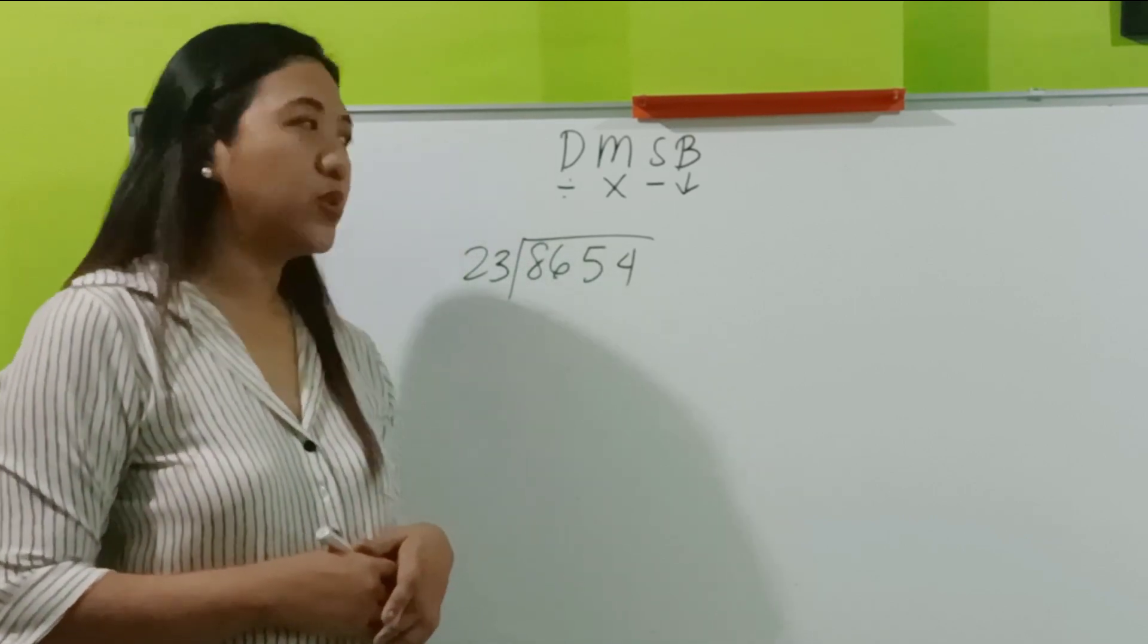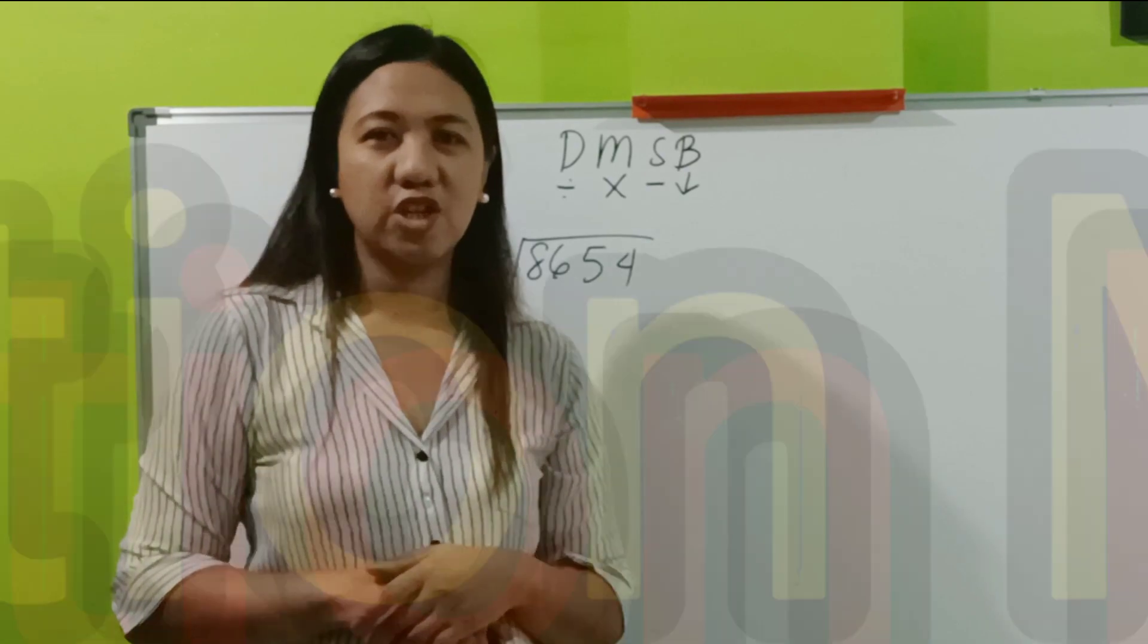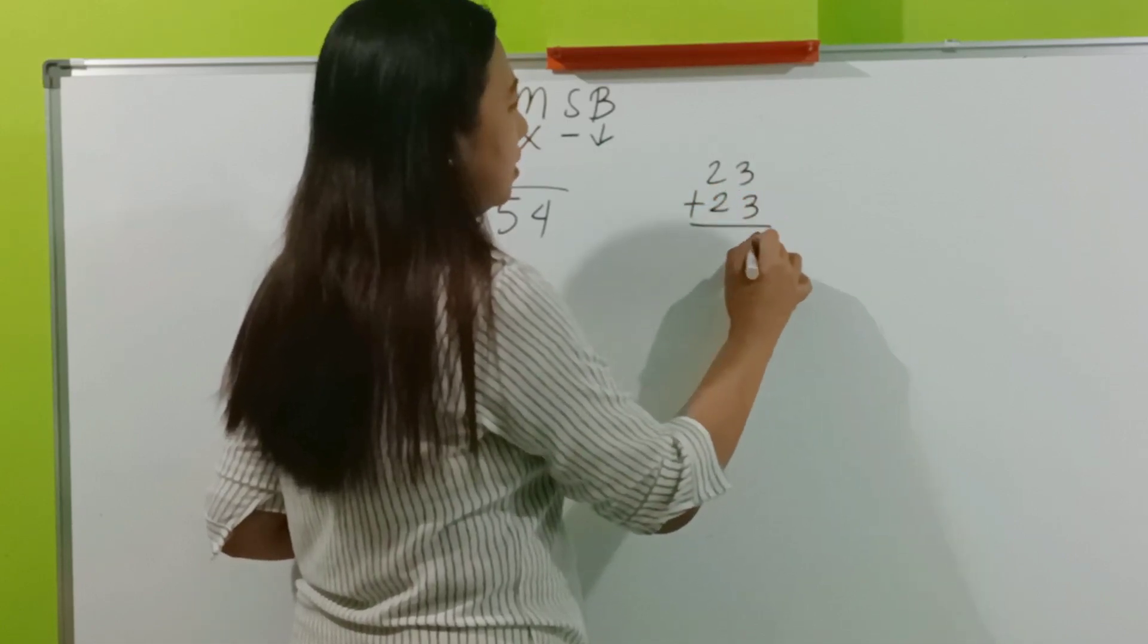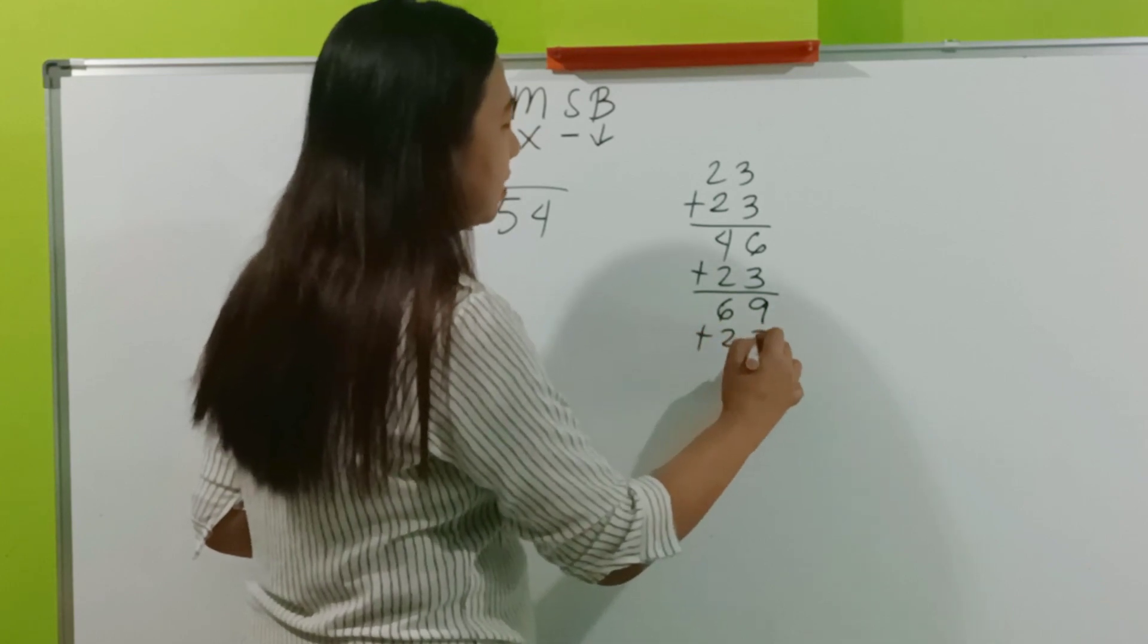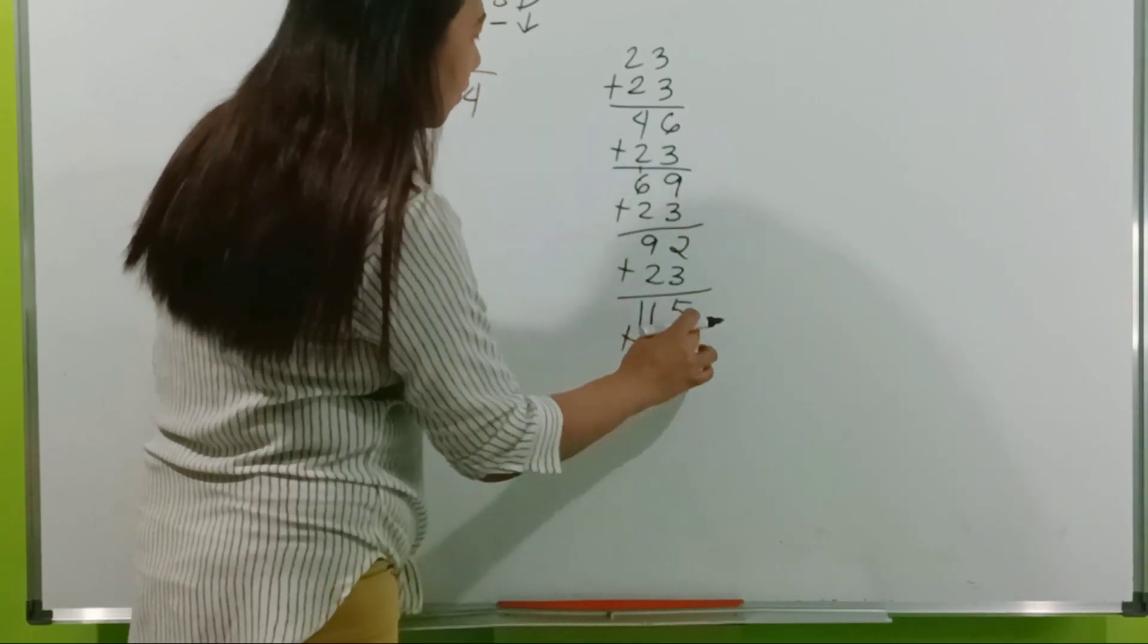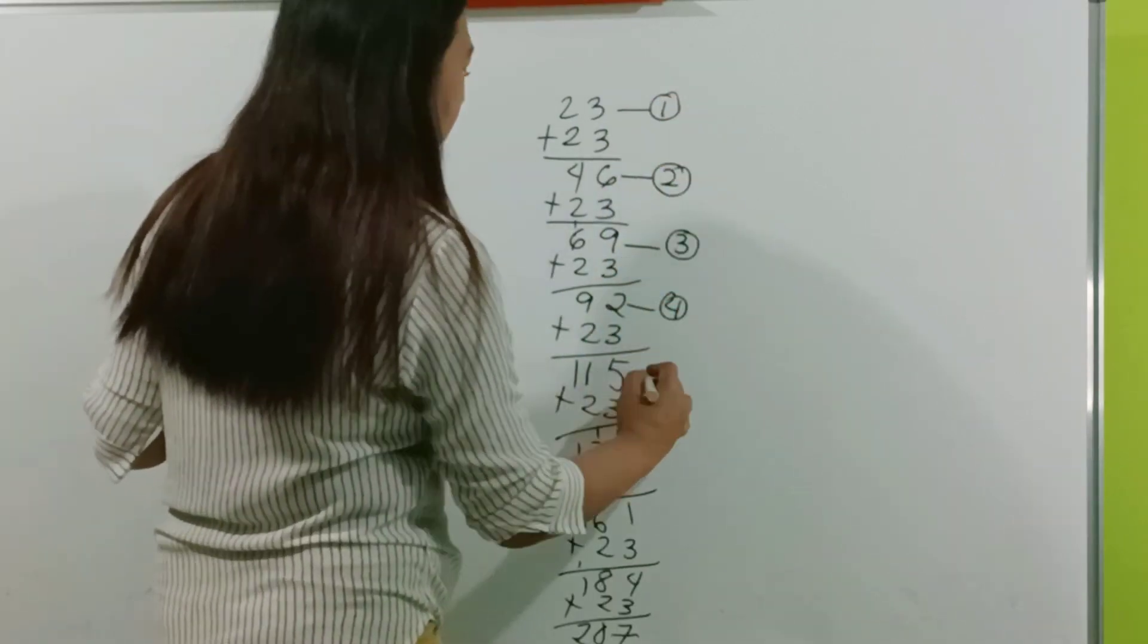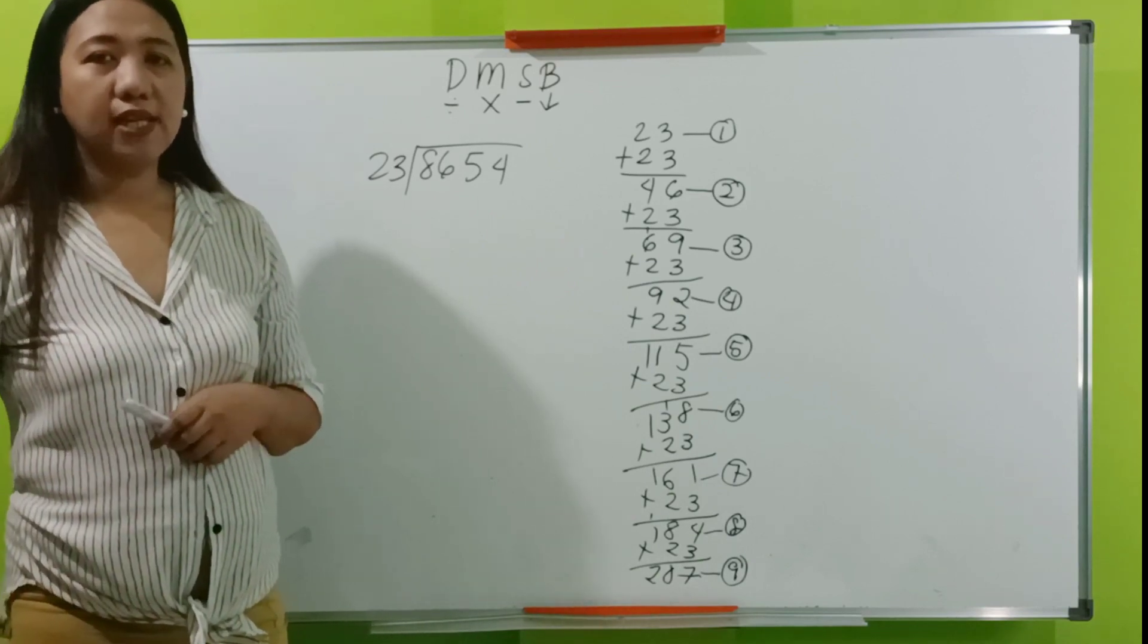We proceed to the second method. We still use the same problem. 8,654 divided by 23. The second method is addition method. In this method, you have to add 23 for 9 times. Let's do it step by step. Add 23 for 9 times. This may be longer, but like what I've said, it doesn't matter how long your method is as long as you will arrive at the correct answer.